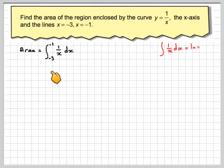Now the area is given by the integral from minus 3 to minus 1 of 1 over x dx.